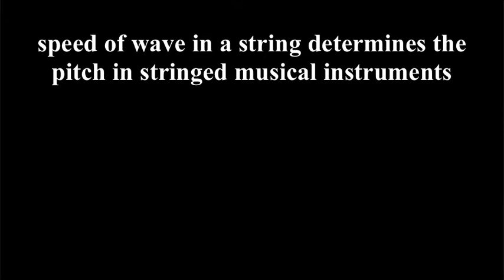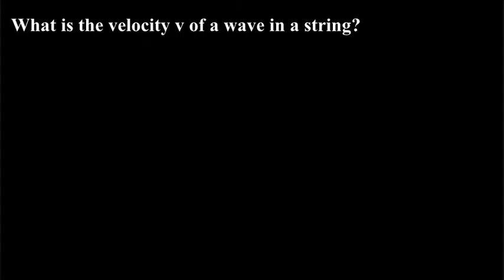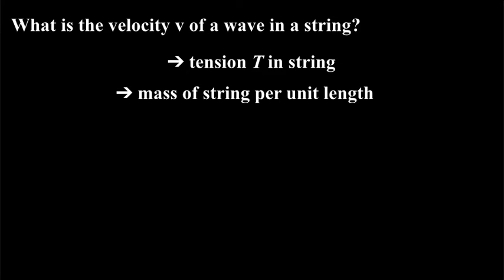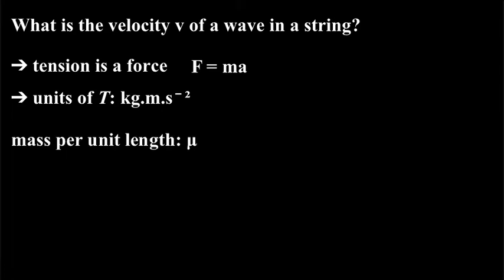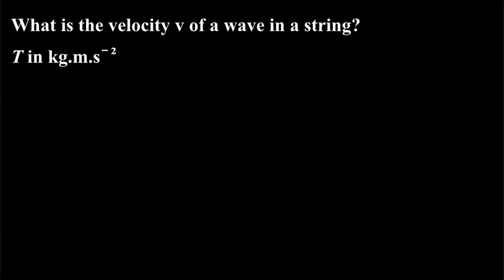Now, the speed of a wave in a string is very important because it determines the pitch in string musical instruments. Let's see if we can work it out. We know that it depends on the tension in the string and whether the string is light or heavy. The tension is a force, so units of force, let's think back to Newton's second law, F equals ma, so the units of tension will be kilograms times meters per second per second. How to distinguish between a heavy string and a light string? Well, the characteristic property is the mass per unit length, also called the line density and given the symbol mu, the Greek letter mu.